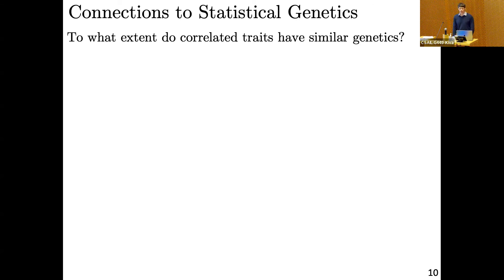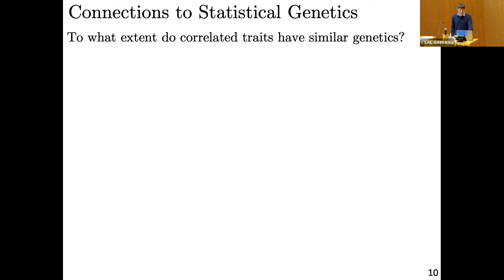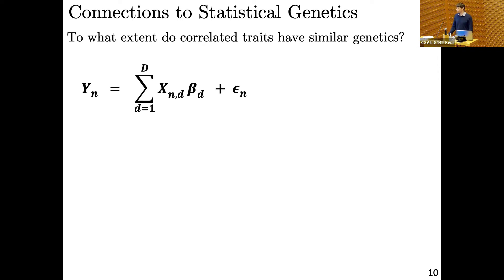I'll take this opportunity to step back and discuss how I got to this approach through statistical genetics, and discuss its relation to the idea of genetic correlation. This work in genetics comes from questions like: to what extent do correlated traits have similar underlying genetics? There's been a lot of discussion about the genetic basis of traits like extreme creativity and mental health — think of famous examples like Ernest Hemingway and Virginia Woolf, and more recently Kanye West or Robin Williams.